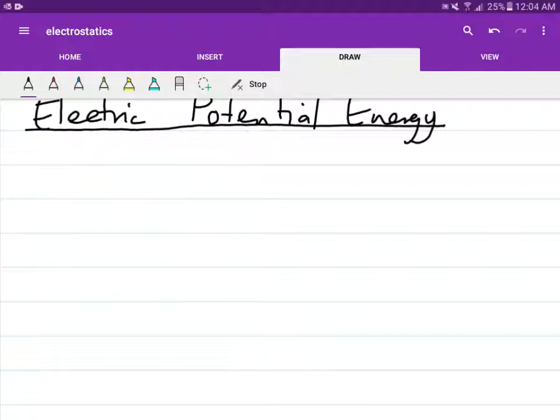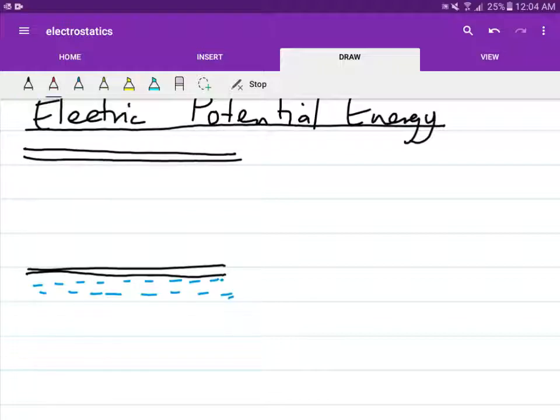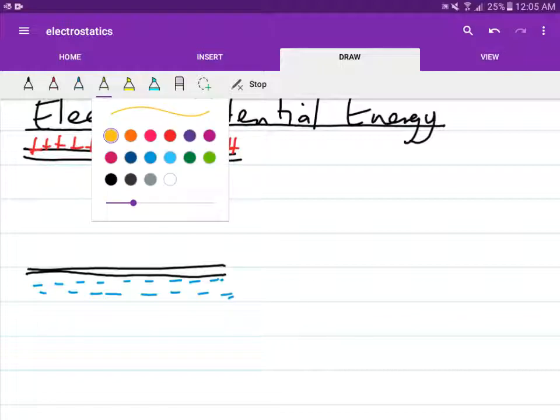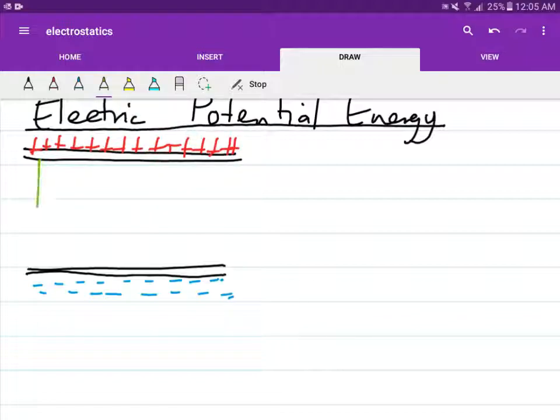Imagine, if you will, a ground composed of negative charges. With these positive and negative charges separated in this region, there will be an electric field that will be pointed in this direction.